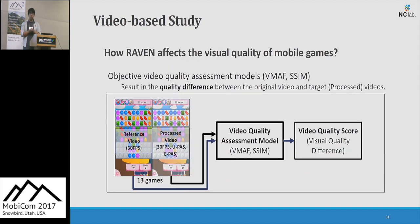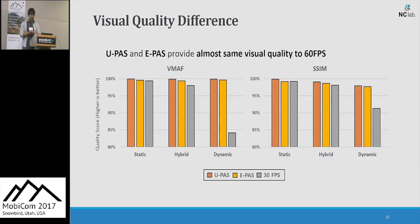To compare the visual quality for each setting, we used a visual quality assessment model that results in the visual quality difference of reference and target videos from the perspective of human eyes. We recorded 13 gameplay videos and made target videos by simulating our settings. We compared using two models: VMAF, a state-of-the-art video quality model made by Netflix, and SSIM. In the result, UPath and EPath showed almost the same visual quality as the original on both models.